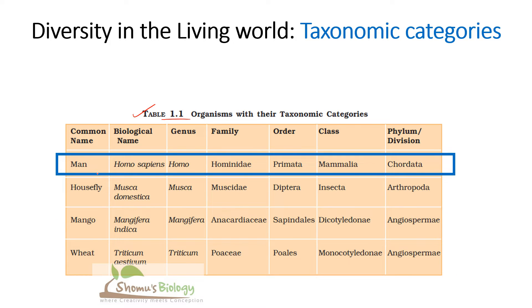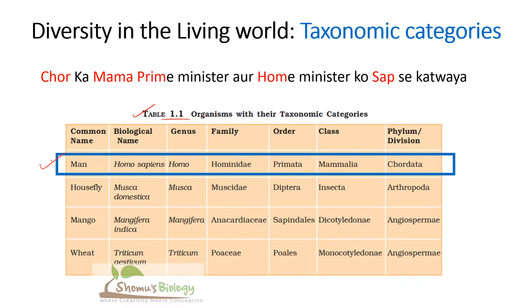The first one is about man, and this is the most important among all four. The easy way to remember is to remember a sentence: 'Chorka mama prime minister or home minister ko sab sekatwaya.' Although this is a Hindi term, I believe you can understand it and can answer from it.